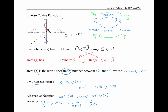One over cosine of x is also called secant of x. Cosine to the negative one of x means arc cosine — the inverse function — and these two things are not the same.